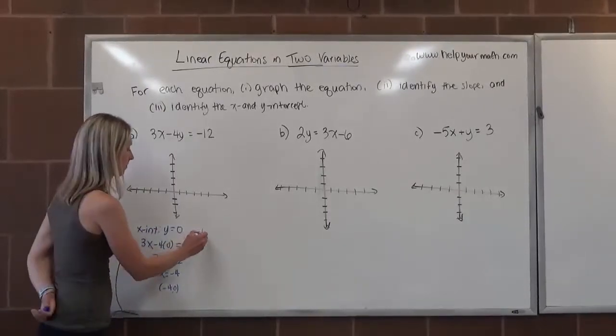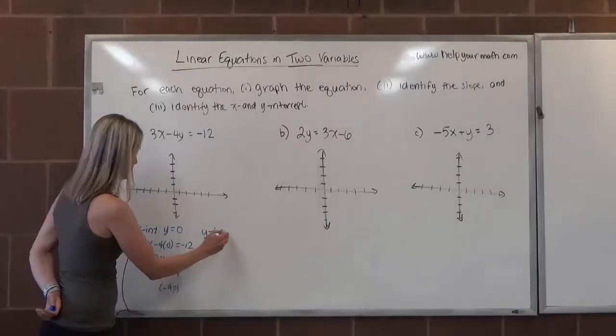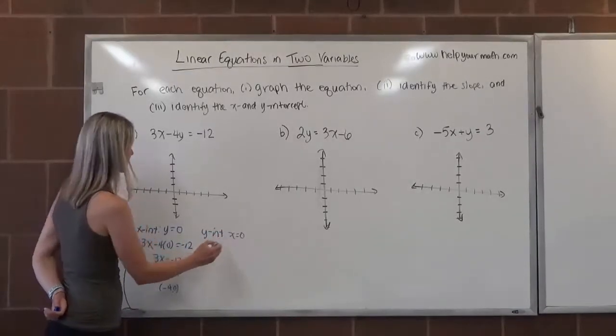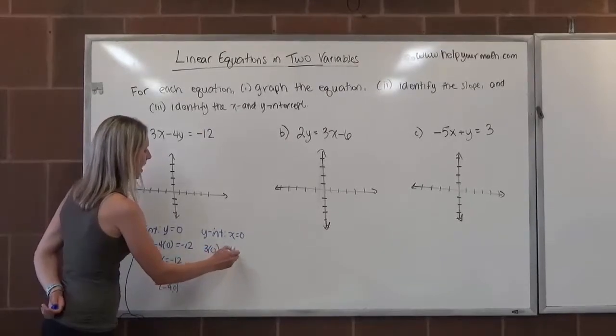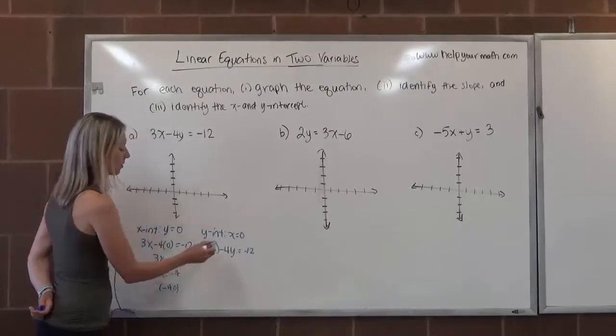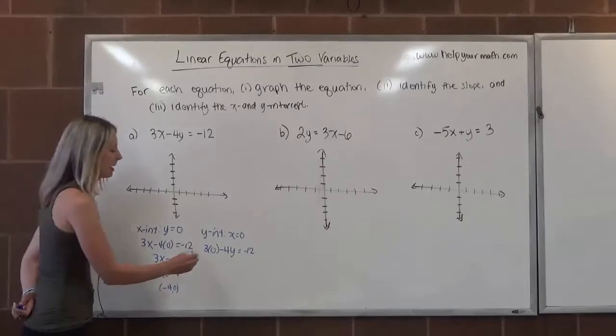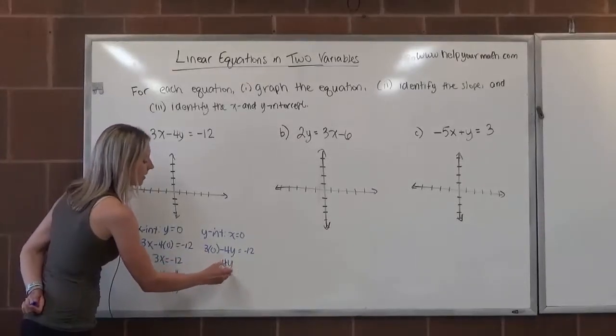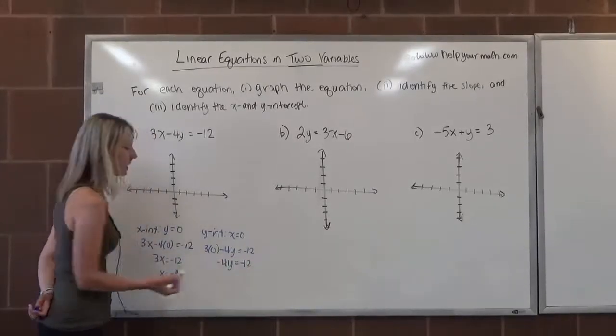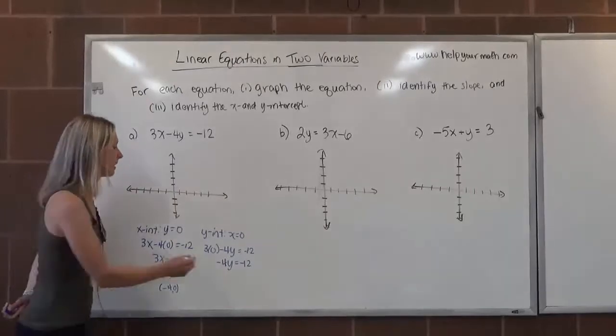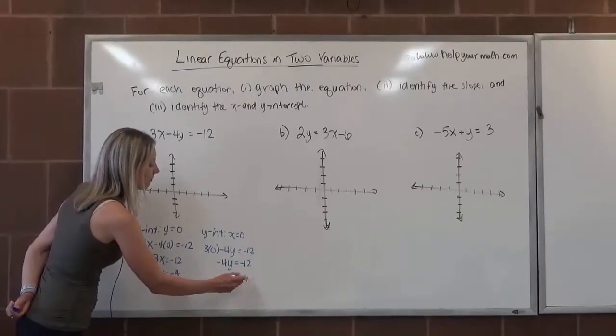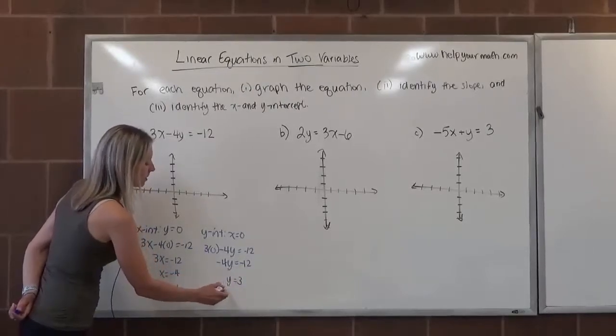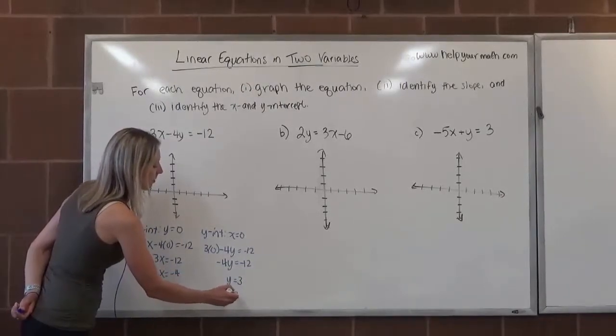To find the y intercept, we can plug in 0 for x. So this would give us 3 times 0 minus 4y equals negative 12. 3 times 0 is 0, so we get negative 4y equals negative 12. To get y by itself, we'll divide both sides by negative 4. Negative 12 divided by negative 4 is positive 3. So that would be the ordered pair 0, 3.